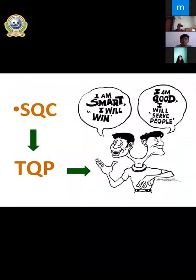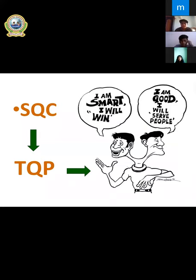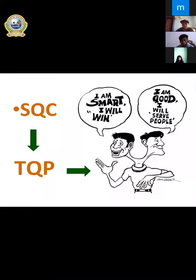If I go further, I can show you in the slide so everybody can see. You can see the word SQC — the acronym we've known for a long time. When students get involved in SQC activities, they are able to build up two types of characters: smart character and good character. The ultimate purpose of SQC is to produce a TQP, which stands for Total Quality Person.